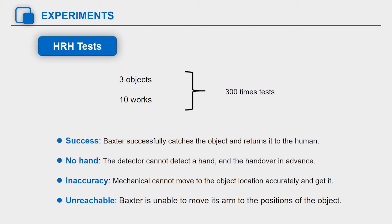Success: Baxter successfully catches the object and returns it to the human. No hand: The detector cannot detect the hand and ends the handover in advance.